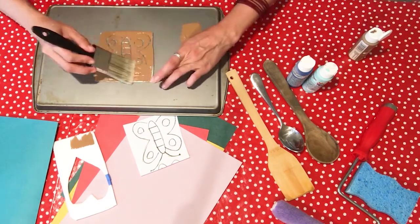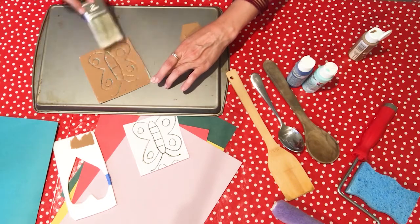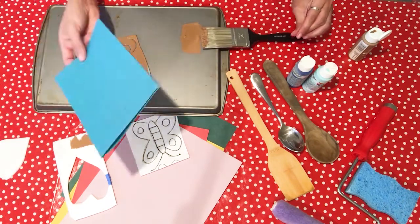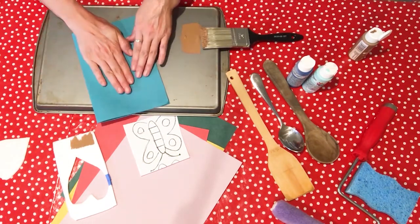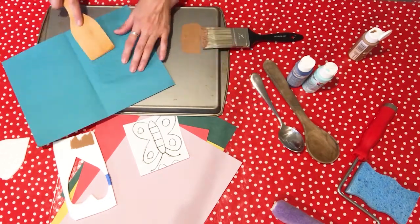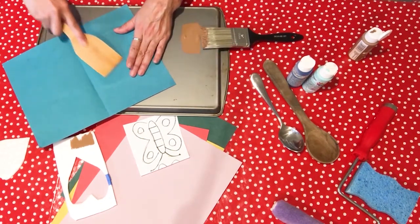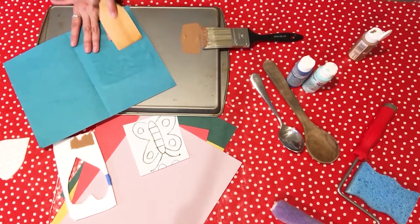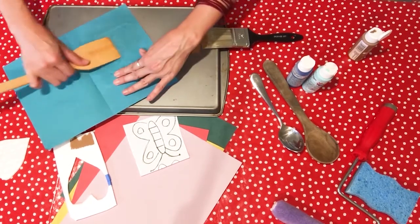Brush your paint across your styrofoam, coating the entire surface. Place a piece of construction paper on top of your block print and use your spoon to rub. Make sure you rub all over the styrofoam, paying close attention to the edges.